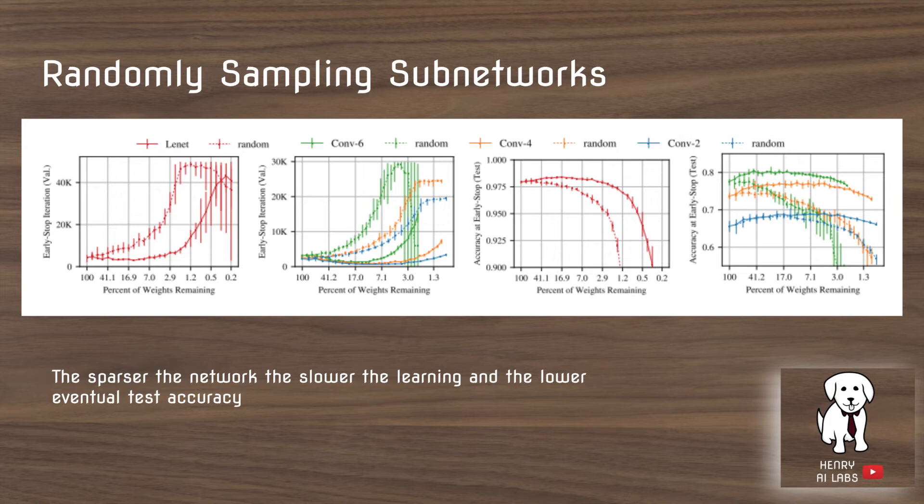Let's say we throw this idea out and you just randomly sample masks to prune the network. This shows that this doesn't work, and that in this case, the sparser the network, meaning the more you prune it out, the slower the learning and the lower the eventual test accuracy.